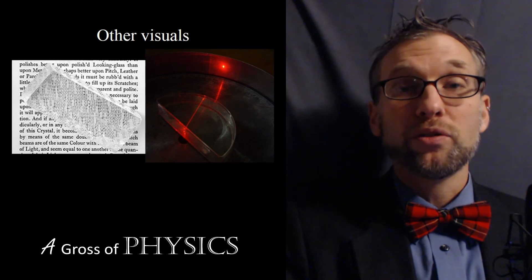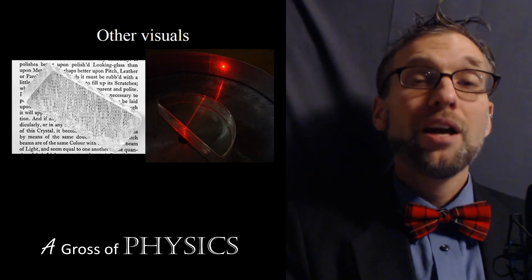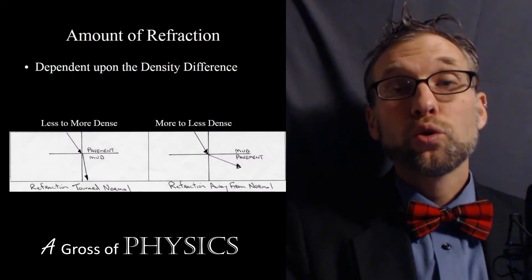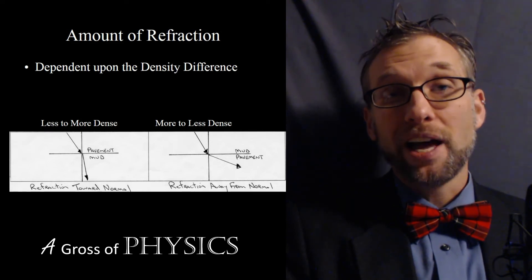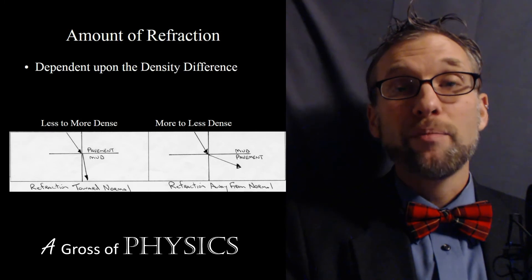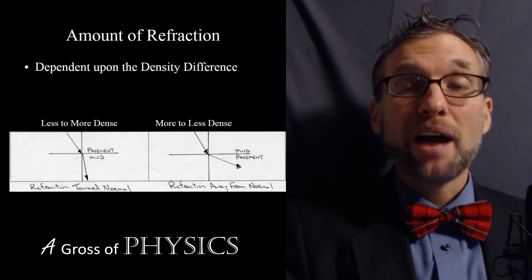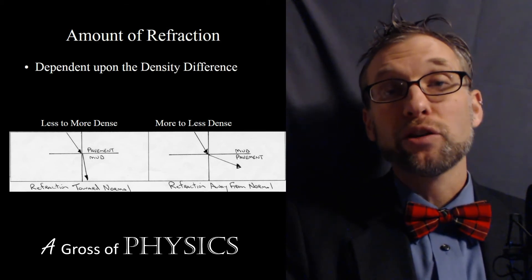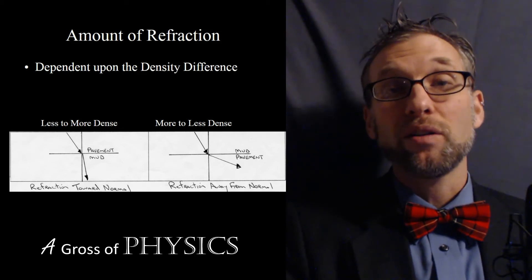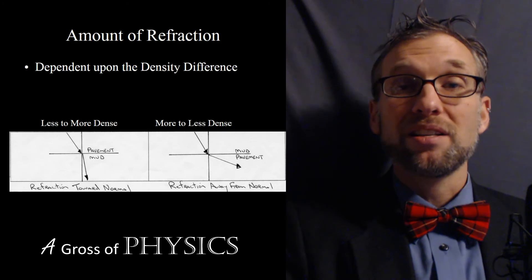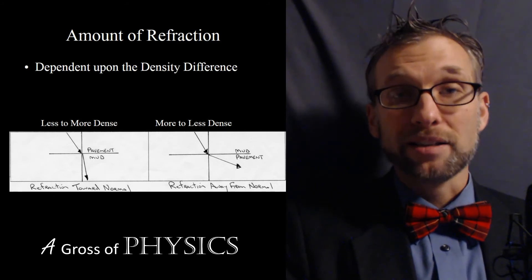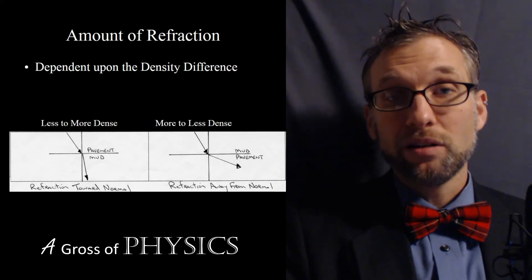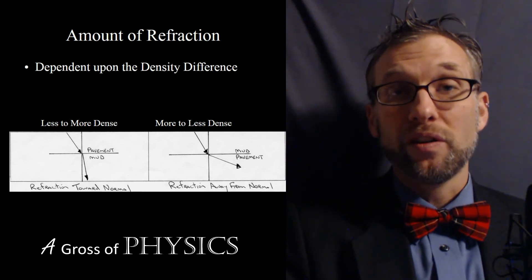Just like reflection, we always measure angles with respect to a normal line. If the boundary surface is horizontal, we draw a vertical normal line and measure angles from that. When traveling into a more dense material, an angle of 10 degrees will turn into about 8 degrees — so if we slow down, the angle gets smaller. The way to remember this: less to more dense, the angle is less. So if we have a 10-degree angle entering a more dense material, the angle of refraction will be smaller than 10.